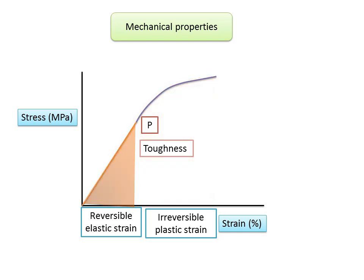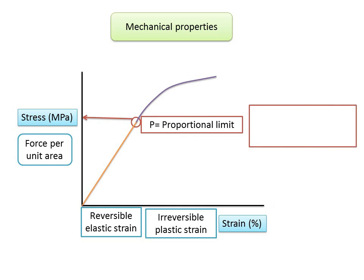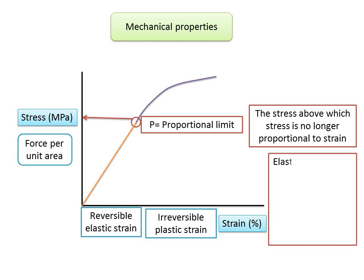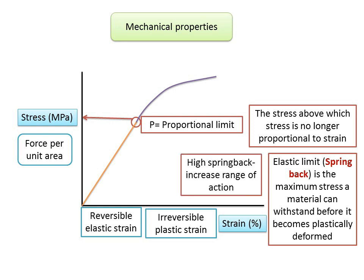Considering strength properties: the proportional limit is the stress above which stress is no longer proportional to strain. The interchangeable term elastic limit measures the spring-back potential of the arch wire — the maximum stress a material can withstand before it becomes plastically deformed. Both values represent the stress beyond which the material no longer follows Hooke's law. Spring back is the measure of how far a wire can be deflected without causing permanent deformation — essentially elastic deflection.